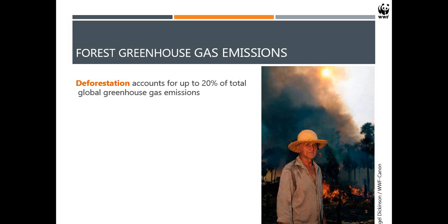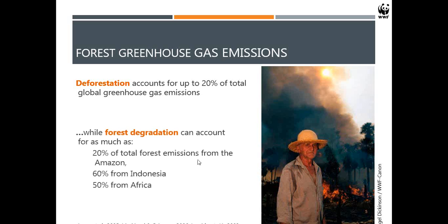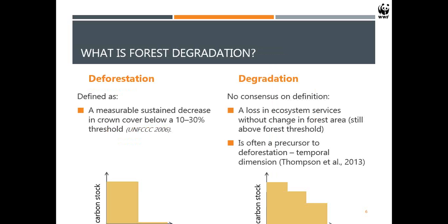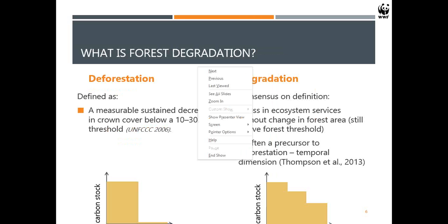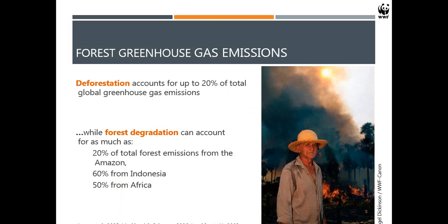So what do we know about greenhouse gas emissions and forests? Deforestation is a significant contributor of greenhouse gas emissions — up to 20% of the global total. Forest degradation, on the other hand, can also account for a wide range of real emissions, and they vary widely by continent — anywhere from 20% to 60% for Indonesia, or around 50% for Africa.